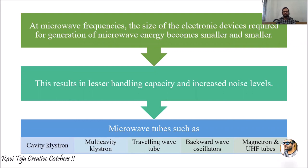All these microwave tubes are mainly designed for generating high power and high microwave frequencies. In summary, to overcome the disadvantages of conventional tubes, microwave tubes are designed for generating high power with high microwave frequencies. The key types are: cavity klystron, multi-cavity klystron, traveling wave tube, backward wave oscillator, magnetron, and UHF tubes.